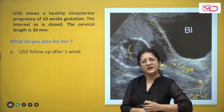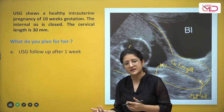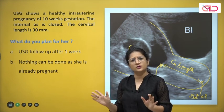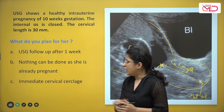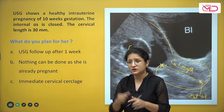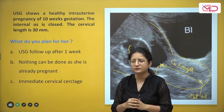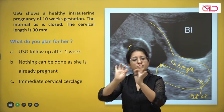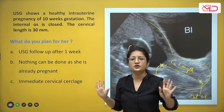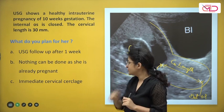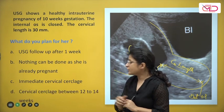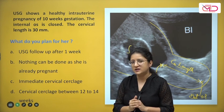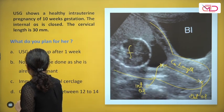Options to consider: do we ask her to return for another ultrasound in one week to recheck cervical length? Do we tell her nothing can be done since she's already pregnant? Do we offer immediate cerclage placement? Or do we plan cerclage but schedule it at 12 to 14 weeks rather than doing it right now? Cerclage is a procedure where the cervix is tied with a suture to help it stay closed, since it cannot hold shut on its own.